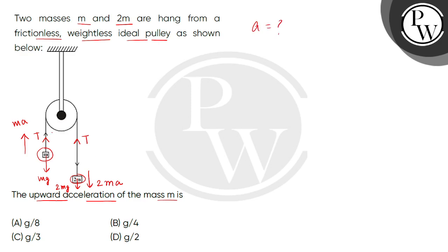So, acceleration will be common for both masses. So, first, let's form force balance equation. We will make force balance equation first for M mass. So, this is twice of M A. This is equals to twice M G minus T. Equation number 1.